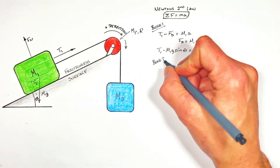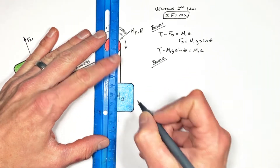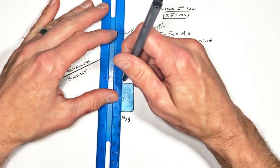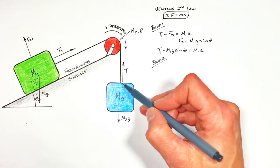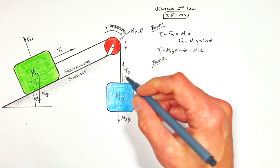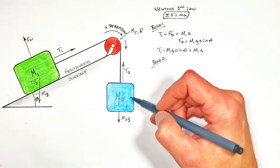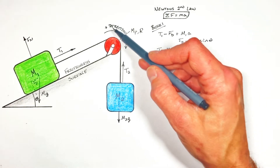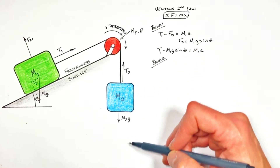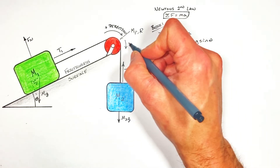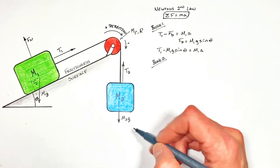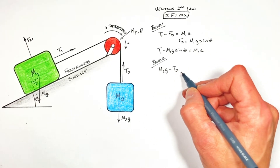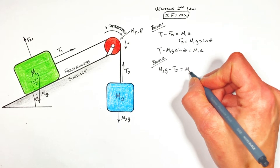Looking next at block 2: on block 2 there's again going to be the force of gravity acting downward, that's M2g, and there's going to be the tension in the string acting upward, slowing the block down. Since this segment of string is connected to block 2, I'm going to call it T2 — the tension in the string connected to block 2. For this block, we're going to apply Newton's second law in the vertical axis. Going back to our positive direction, we decided that anything which made block 1 move up the hill was positive, and that corresponds to the downward motion of block 2. So downward is the positive direction for this block, meaning M2g is positive and T2 is negative: M2g minus T2 equals M2 times A.